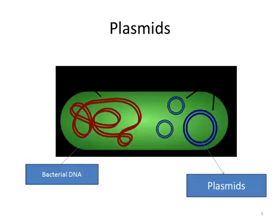Plasmids are circular DNA molecules found in the cytoplasm of bacteria. These plasmids carry genes that code for specific traits, such as antibiotic resistance, toxin production, and more.